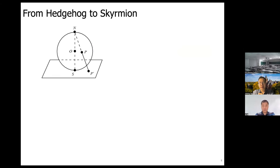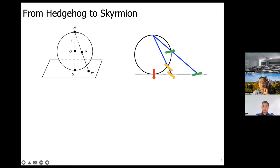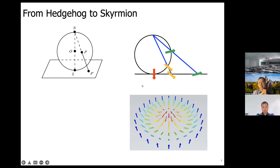The hedgehog state and the skyrmion share a closely related manifold — one is compact and the other extended in 2D. Their relation can be characterized by stereographic projection. You place a unit sphere on top of the 2D plane; for any point P' on the plane, draw a line to the north pole, and it intersects the sphere at point P. Assign the hedgehog spin at P (radial direction) to point P' and you get a skyrmion on the 2D plane.